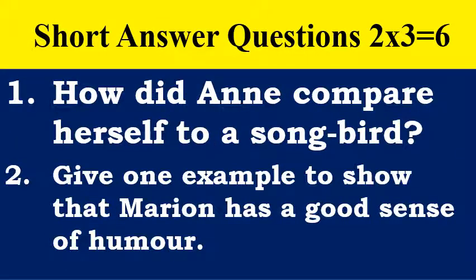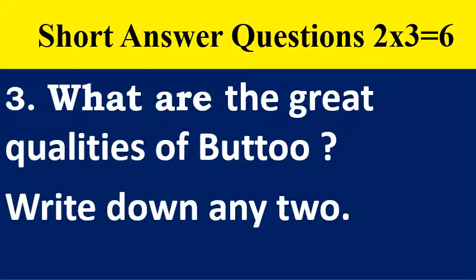Short answer questions carry two marks each — totally three questions. Question one: 'How did Anne compare herself to a songbird?' Question two: 'Give one example to show that Marion has a good sense of humor.' Question three: 'What are the great qualities of Ekalavya? Write down any two.' These are the three questions for a total of six marks.